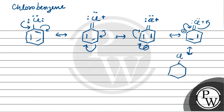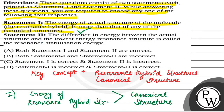So it goes back to the same structure — this is the resonance stabilized structure. So the first statement is correct. Now, the second statement says: the difference between the actual structure and the lowest energy resonance structure is called the resonance stabilization energy.